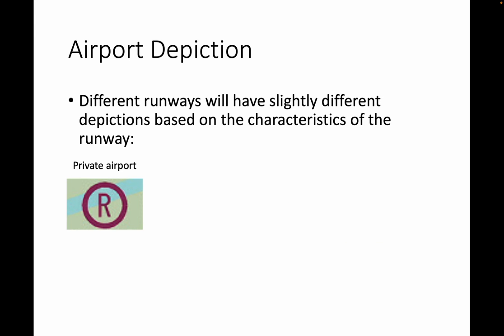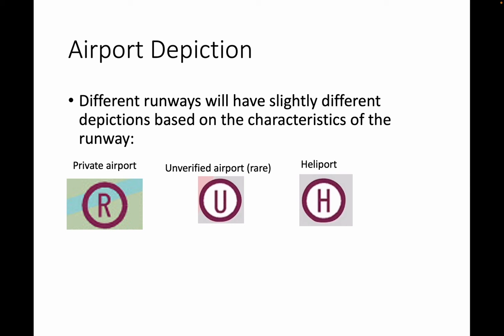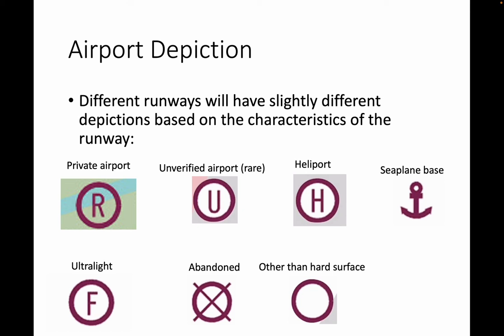There are different types of airports besides normal civil airports. R stands for private airport, U is an unverified airport, H is a heliport, and an anchor symbol is for a seaplane base. F is for an ultralight, and a crossed-out airport symbol is an abandoned airport. An empty circle denotes an airport with other than hard surface — perhaps a grass strip. The little tick marks around the outside of the circle mean that fuel is available. And again, the star means there's a beacon at that airport.